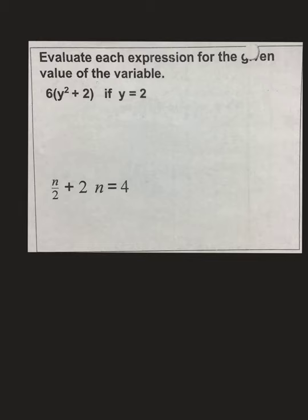Alright, here are our next two problems. The first one says 6, and then in parentheses, y squared plus 2, if y equals 2. So, step one is to substitute 2 into our expression where y is. So, we bring everything else with us. So, 6, parentheses, instead of y, I put my 2, bring my exponent, my plus sign, 2, and my parentheses.